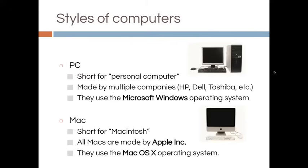There are two main styles of computers. One is a PC, short for personal computer, made by multiple companies — HP, Dell, Toshiba, etc. — and they use the Microsoft Windows operating system. This makes them different from a Mac. Mac is short for Macintosh; all Macs are made by Apple Inc. and they use the Mac OS X operating system.